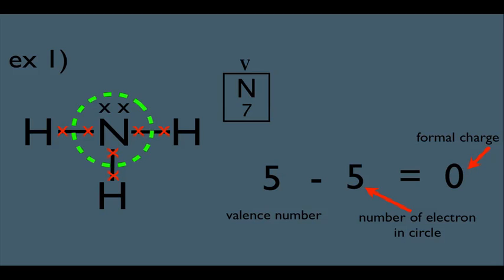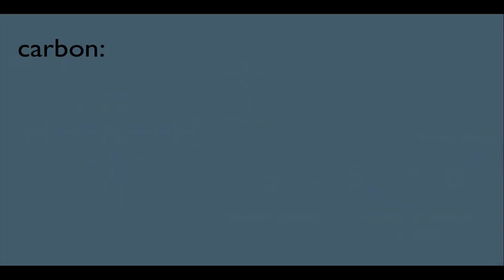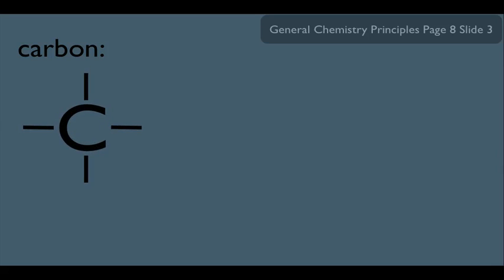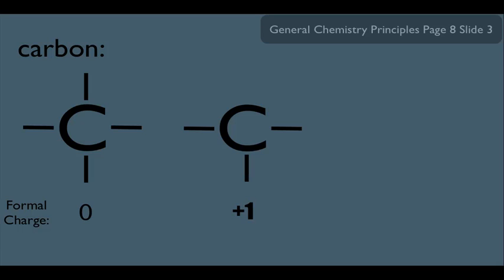To be well versed in organic chemistry, memorize the formal charges of popular atoms. Any time you see carbon making four bonds, his formal charge is zero. Any time you see carbon making three bonds, his formal charge is going to be plus one, indicated by a little plus on top. And any time we see carbon with three bonds and a lone pair of electrons, he's always going to have a negative one formal charge.